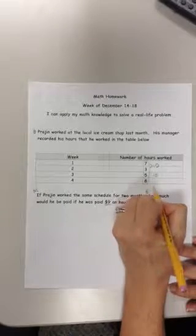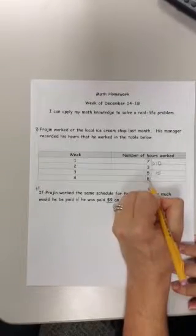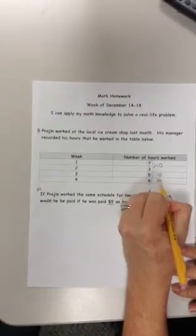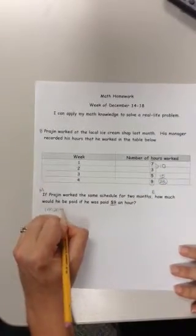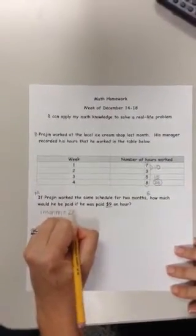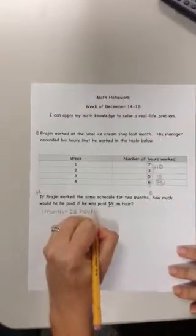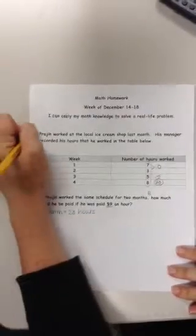And then 15 plus eight, well, I know 15 plus five is 20. Then three more is 23 total hours in one month. So one month equals 23 hours. Okay, so I'm done with that.